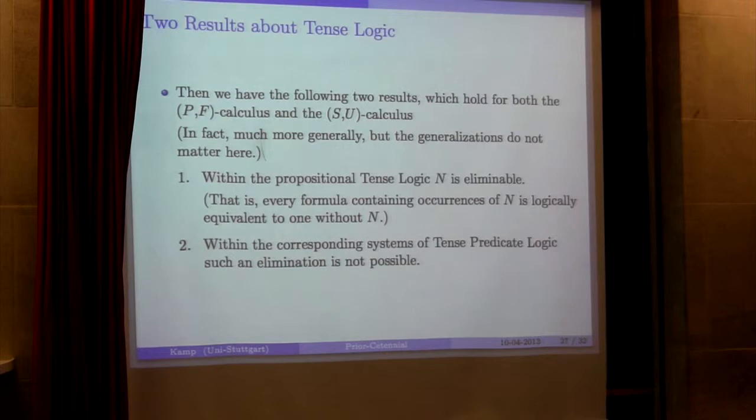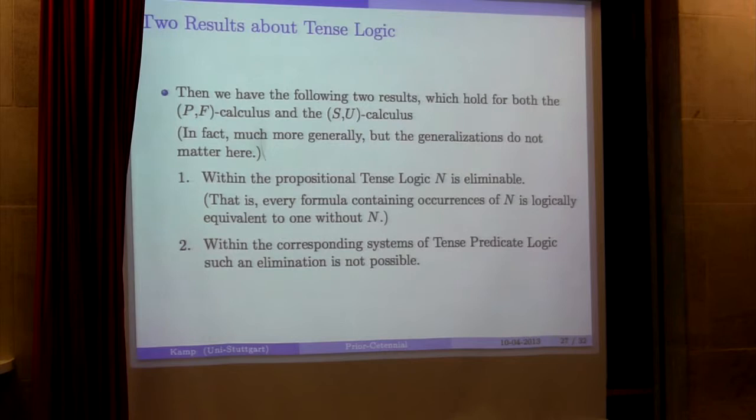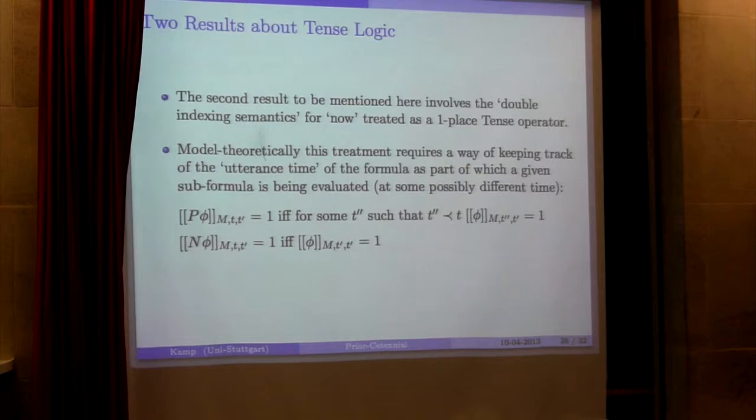But there are also lots of operators that you can easily conceive of or define formally and that you cannot express in the PF calculus. One example is this operator P prime, where P prime phi says at a given time that phi is true in the past at points arbitrarily close to where you are. Now, that's perhaps an operator that's not entirely natural from the point of view of natural language, I don't know, but it's certainly something that you can define formally, and you can prove that that's not expressible within the PF calculus.